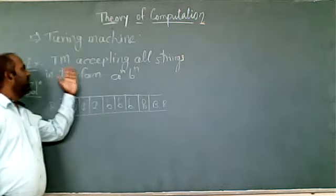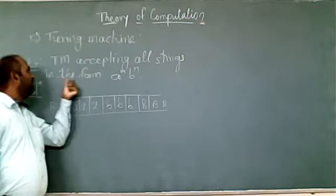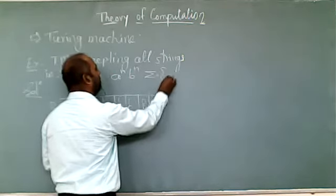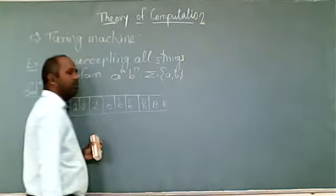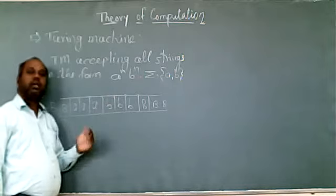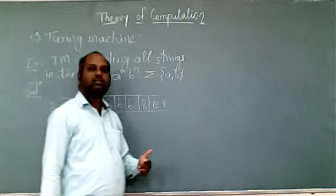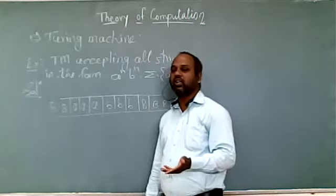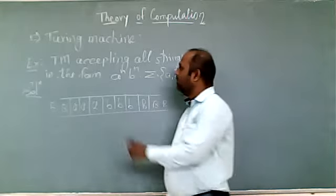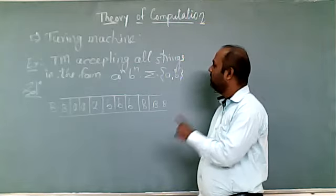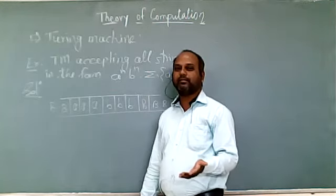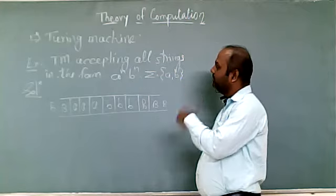Today's problem statement is a Turing machine accepting all strings in the form a raised to n, b raised to n, where sigma equals {a, b}. The inputs are a and b. We have solved this problem — accepting all strings in the form a^n b^n — in a number of ways before, and we will use the same problem to understand the Turing machine.